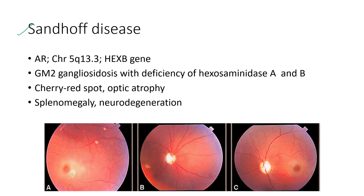Next is Sandhoff disease. It is an autosomal recessive condition — GM2 gangliosidosis with deficiency of hexosaminidase A and B. The ocular features include cherry-red spot and optic atrophy. The systemic features include splenomegaly and neurodegeneration.